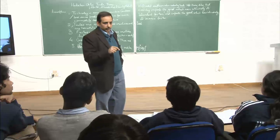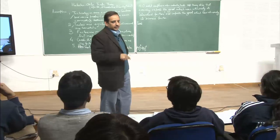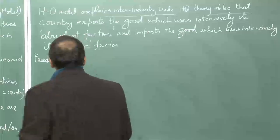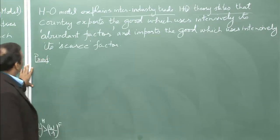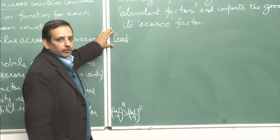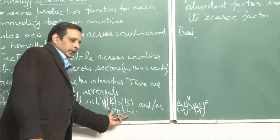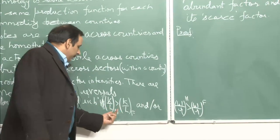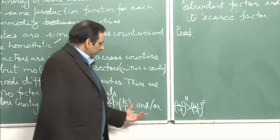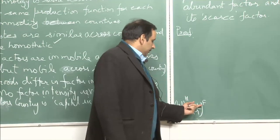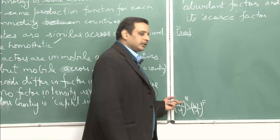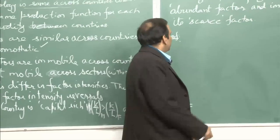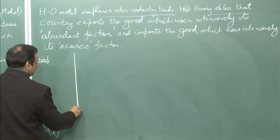Relative factor productivity — Ricardo defines technology in that sense. Now I will give the proof, and the proof will take from the two definitions of factor abundance. One is the definition that a country is capital rich if K/L at home is greater than K/L at foreign. The other is that foreign is labour rich if W/R ratio in foreign is lower than W/R ratio in home. Let us see this diagrammatic exposition.